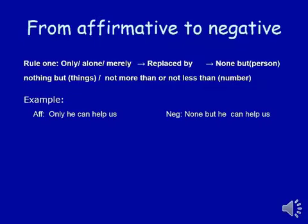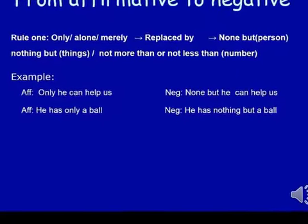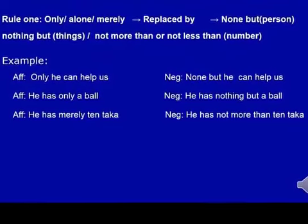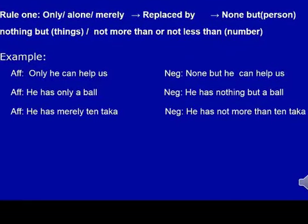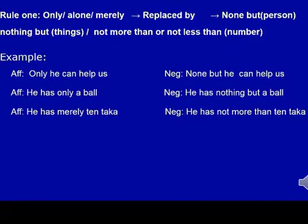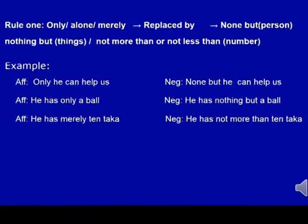Look at the examples. 'Only he can help us.' In case of a person, we have to use 'none but.' So: 'None but he can help us.' Next, 'He has only a ball.' A ball is a thing, so we use 'nothing but': 'He has nothing but a ball.' In case of a number: 'He has merely 10 taka.' This becomes: 'He has not more than 10 taka,' or 'He has not less than 10 taka.'